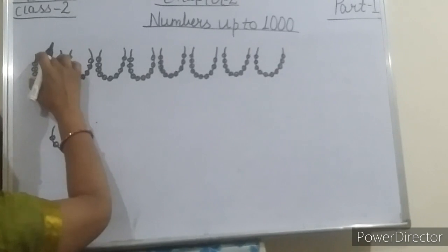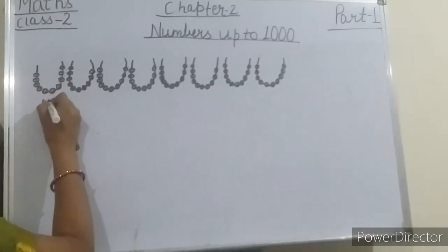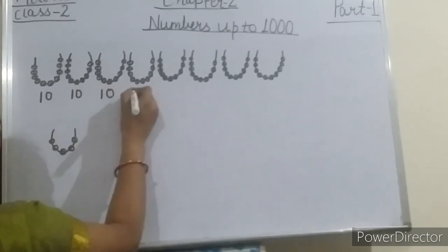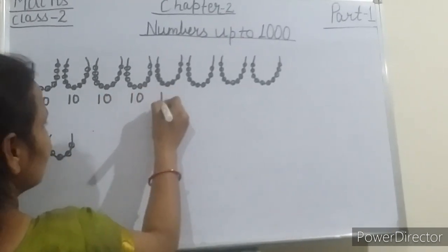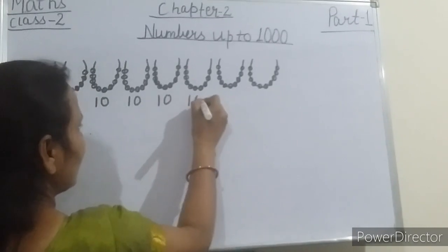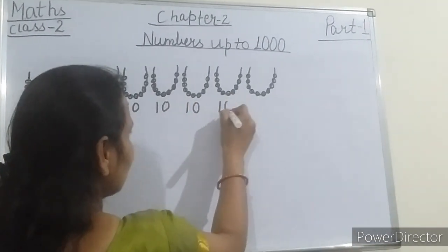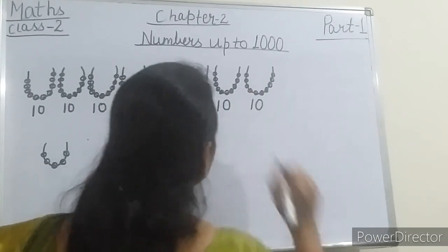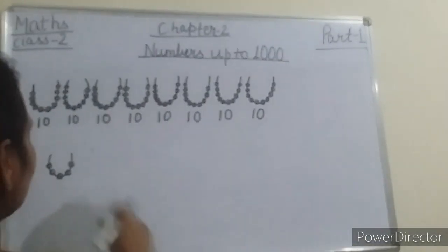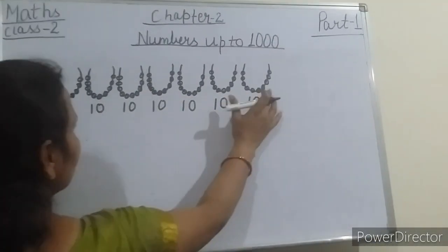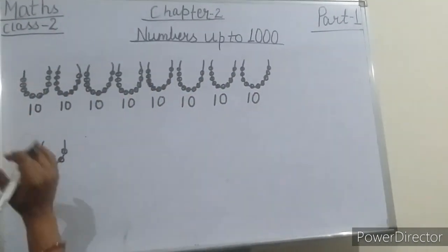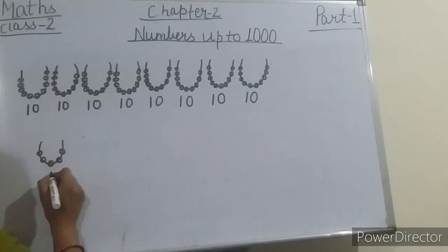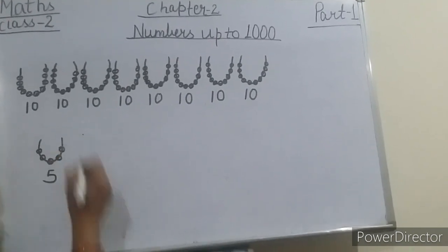So here in one necklace, how many beads? 10 beads. Again 10 beads. Here also 10. In each necklace I have to make 10 beads. And here, 5. So here I have to make 5.